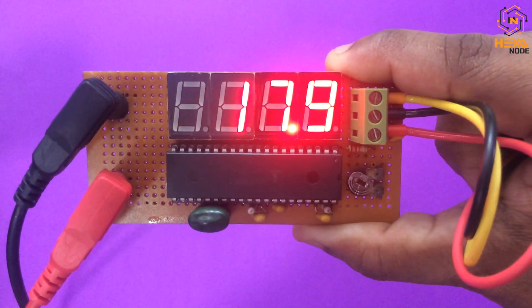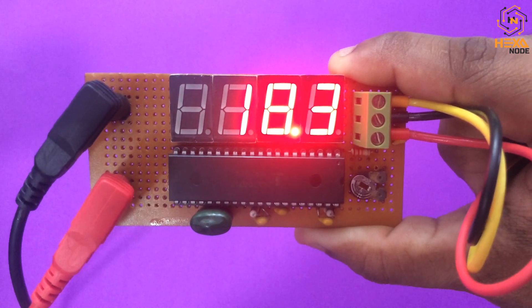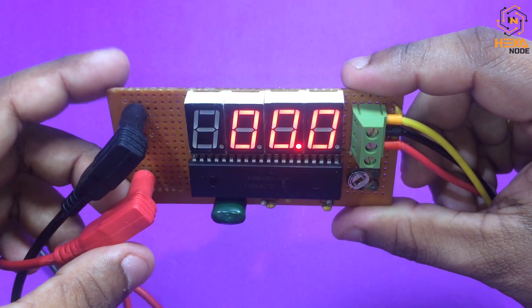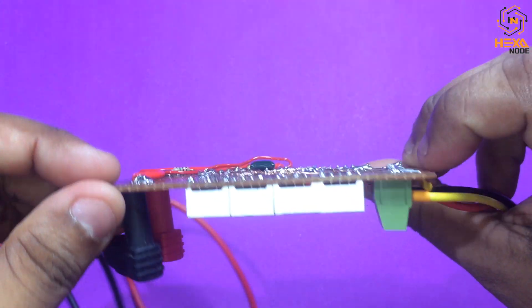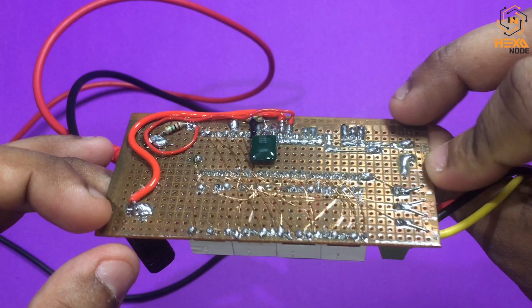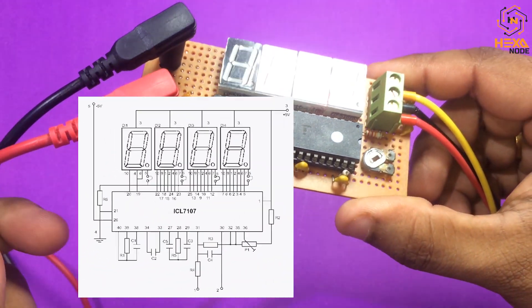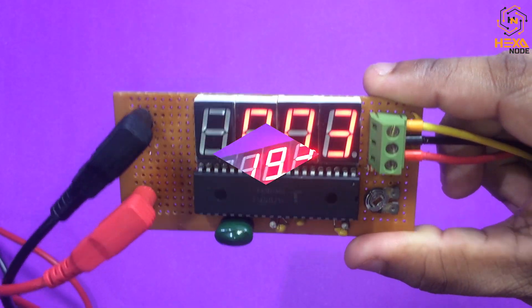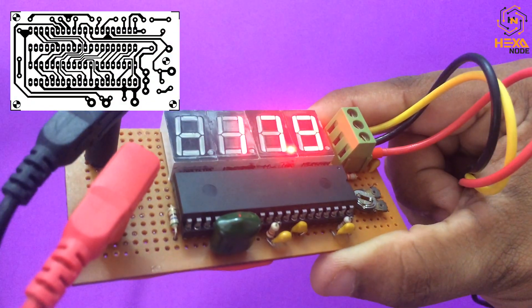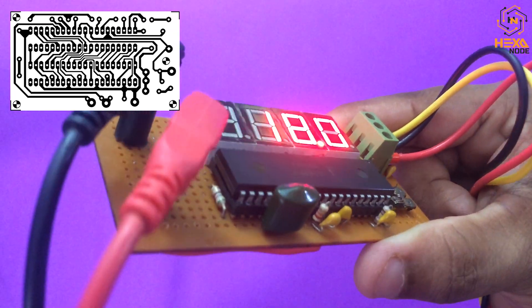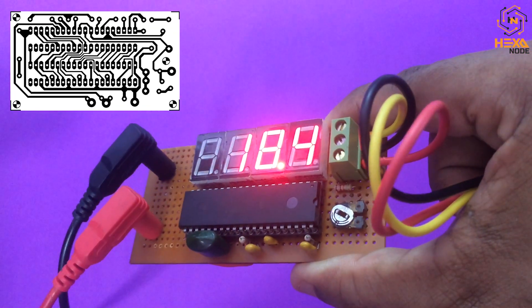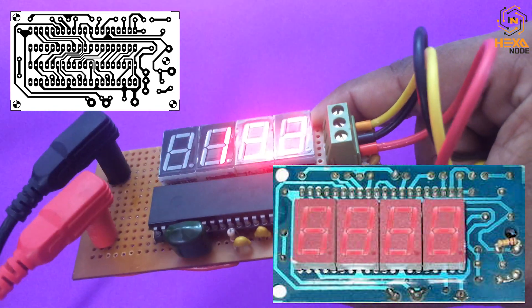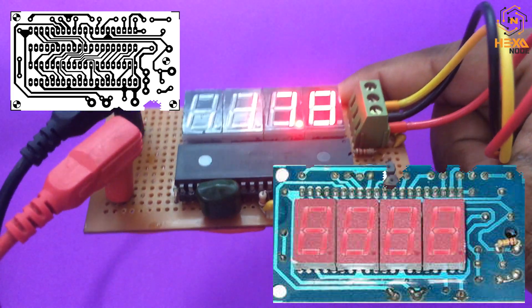We can use the voltage input. If you have a dot board, you can use a dot board. If you have a Google Drive link, you can also use a dot board. We can use a PCB layout. It can be used with a copper board or ferric chloride.